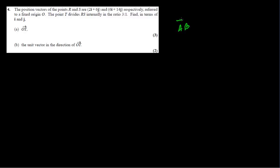Question number 4 is vectors. Whenever we do vectors in pure math, the best way is by using the position vector rule. The position vector rule says: to find vector AB, it equals the position vector of the terminal point OB minus the initial point OA. So vector AB = OB − OA. We have the position vectors OR and OS given, and t divides line RS in a ratio.